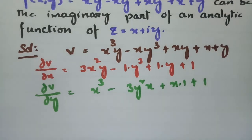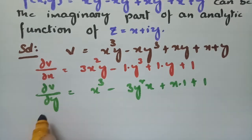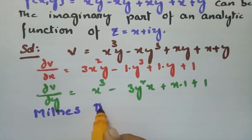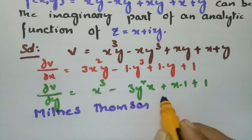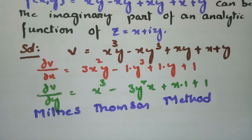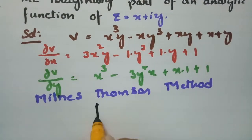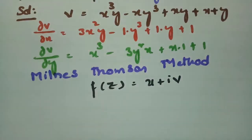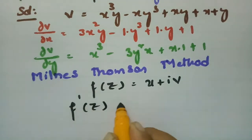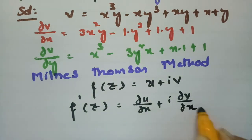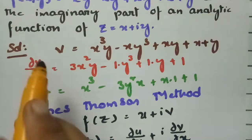Now I am going to use the Milne-Thomson method. According to the Milne-Thomson method, f of z equals u plus i times v. If I make a derivative with respect to x, f′(z) equals ∂u/∂x plus i times ∂v/∂x.